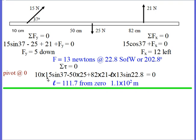With the pivot at zero, the torques are: at an arm of 10 centimeters, the 15-newton force times sine of 37 degrees gives the perpendicular component. At an arm of 50 centimeters, there is the 25-newton force, which is listed as negative because when you wrap your right hand from the arm into the force, your thumb points into the page — a negative torque. In the other case, the thumb points out of the page — a positive torque. Then we have the 13-newton force at 22.8 degrees at some unknown distance L, which is presumably to the right of the pivot and thus also negative.